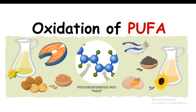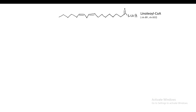For polyunsaturated fatty acid oxidation: oily fish such as salmon and tuna, eggs, chia seeds, flax seeds, almonds, and walnuts are all good sources of PUFA. A popular PUFA is linoleic acid, which has double bonds at two distinct positions — the ninth and twelfth positions.